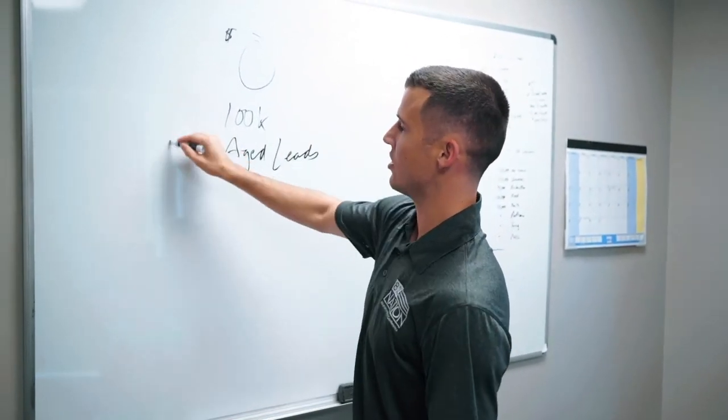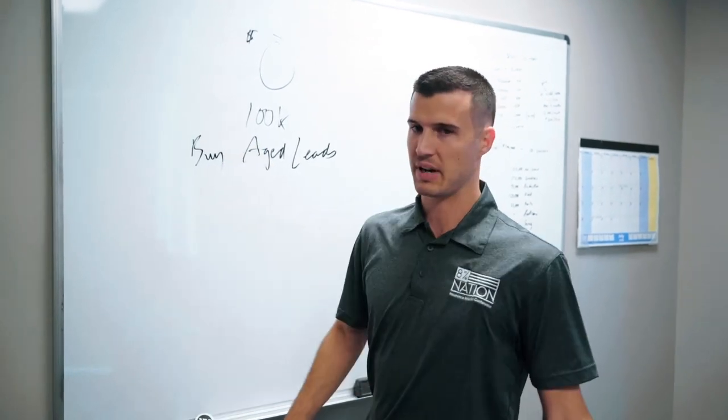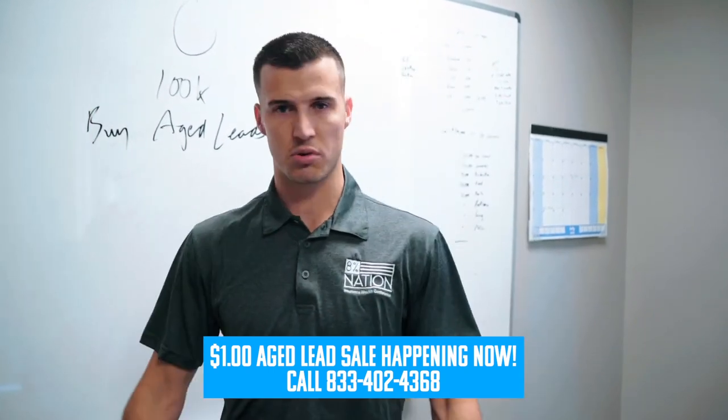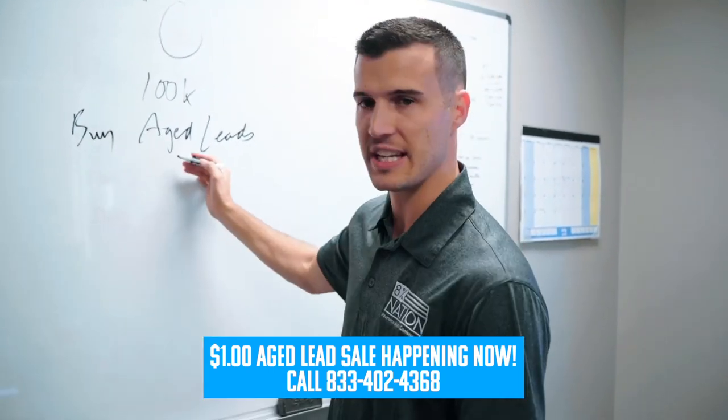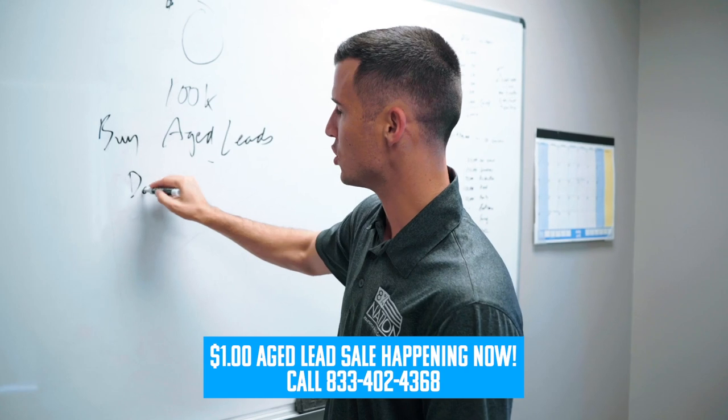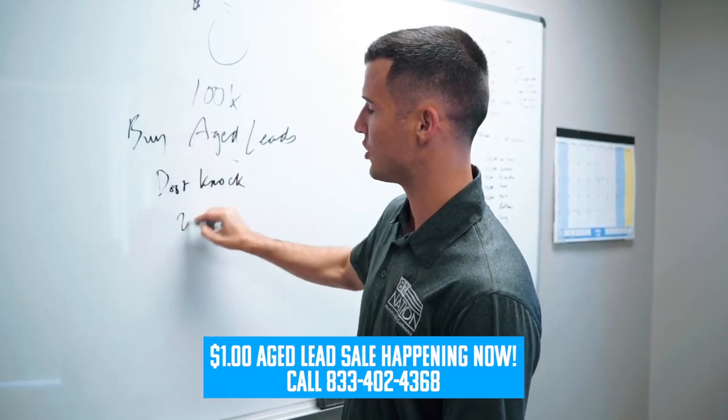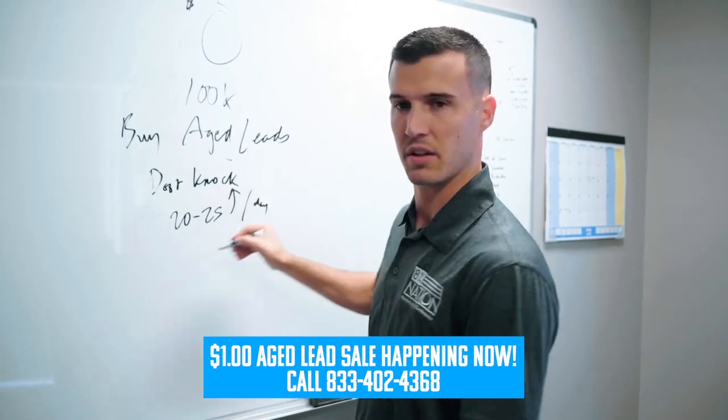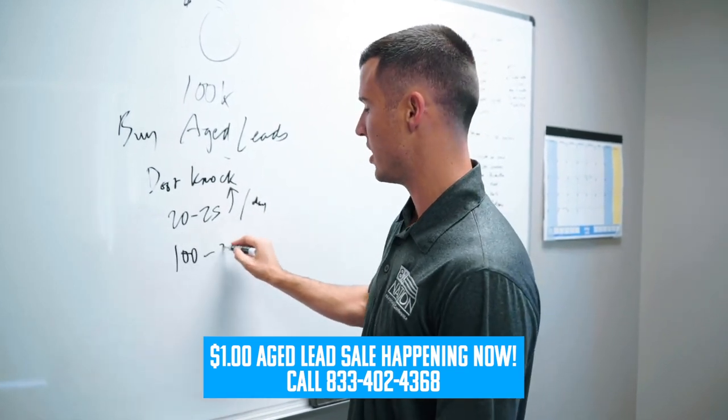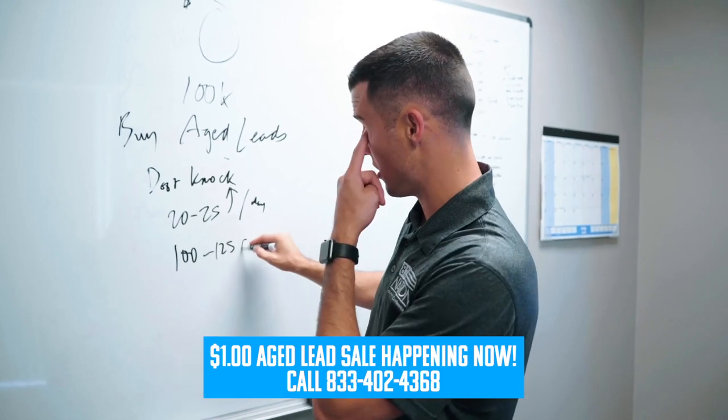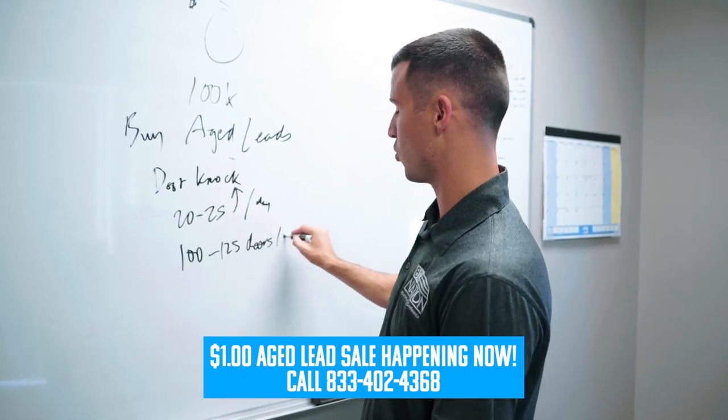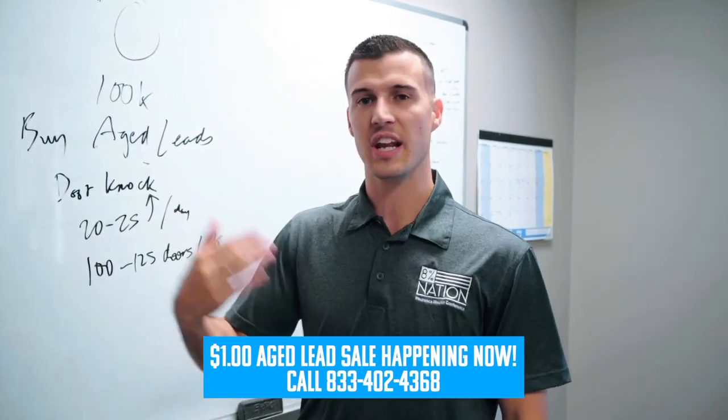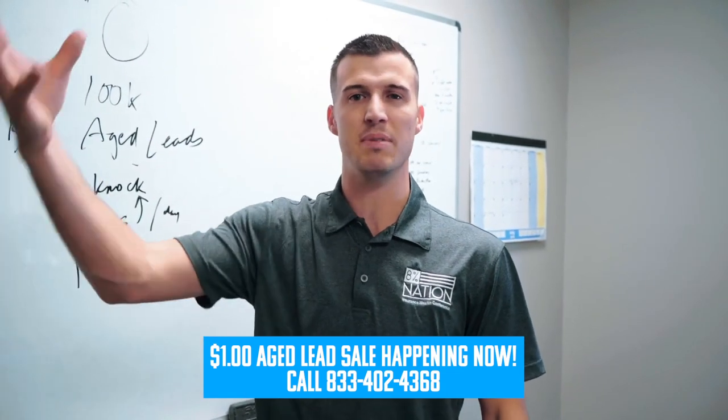You buy aged leads, whether they be from us or from somebody else, A3340 agent, or you buy from somebody else. There's all kinds of places, aged leads stores. Buy aged leads and then you go door knock and you set up like 20 to 25 knocks per day. And you get to where you're knocking about 100 to 125 doors per week. And you're going to do enough knocking and enough activity that you're going to end up making money just because.